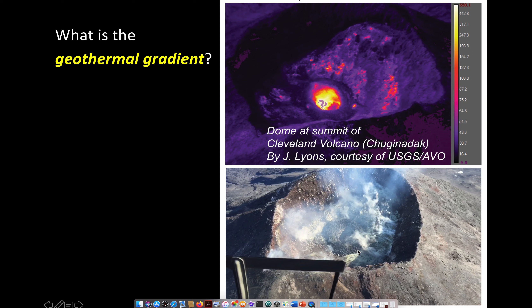We've talked a little bit about heat flow, and in this image you can see both a false color infrared image of the summit dome at Cleveland Volcano. This dome has since been destroyed and exploded in an eruption, but the color there represents the temperature. You can see the fumaroles to the right in those bright spots.